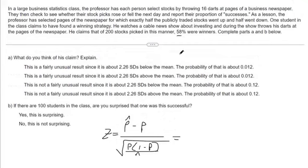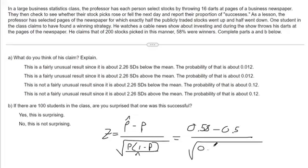So 0.58 is our probability from our sample. We're comparing that to the probability of 0.50. Divide that by the square root of 0.5 times 1 minus 0.5, and then the sample size was 200.